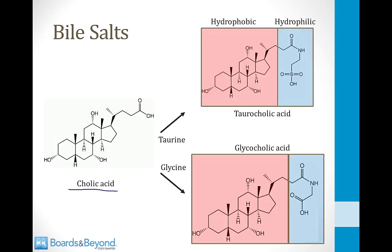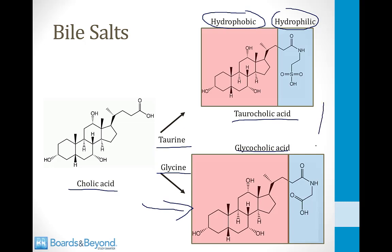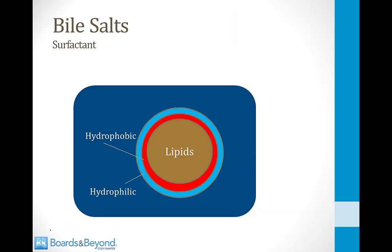The two structures added are taurine, which is an organic acid shown on the screen here, and glycine, which is an amino acid. Both are very hydrophilic and are added to the carboxylic end of the bile acid molecule to create a bile salt. Once we create a bile salt we now have a better surfactant because one end of the molecule will be highly hydrophobic and like lipids, and the other end will be highly hydrophilic and like water. For example, conjugating cholic acid to taurine gives taurocholic acid — a bile salt with a hydrophobic end shown in red and a hydrophilic taurine end in blue. Conjugating cholic acid to glycine creates glycocholic acid, also with a hydrophobic end in red and a hydrophilic end in blue.